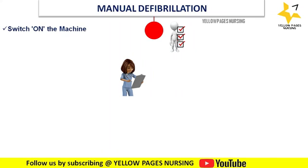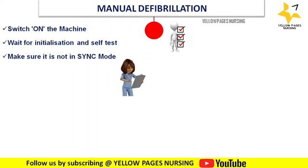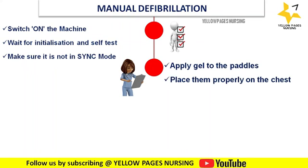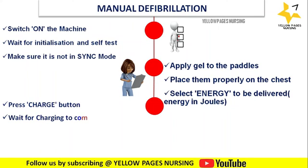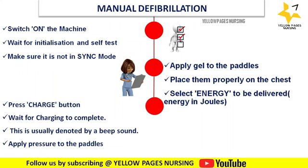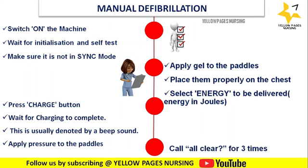Steps of manual defibrillation: Switch on the machine and wait for initialization and self-test. Make sure it is not in synchronous mode. Apply gel to the paddles and place them properly on the chest. Select the energy to be delivered in joules, press the charge button, and wait for charging to complete — typically indicated by a beep sound. Apply pressure of 25 lbs to the paddles.